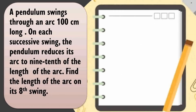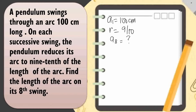A pendulum swings through an arc 100 cm long. On each successive swing, the pendulum reduces its arc to 9 tenths of the length of the arc. Find the length of the arc on its 8th swing. So a sub 1 is 100 cm, and the common ratio is 9 over 10. We are looking for the length at the 8th swing. Using the formula, a sub n equals a sub 1 times r raised to n minus 1.